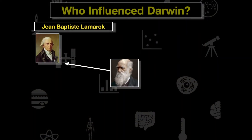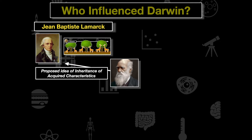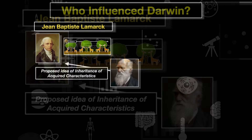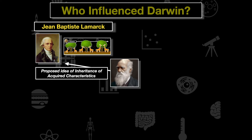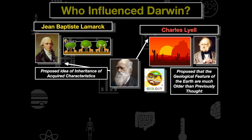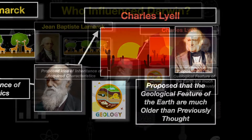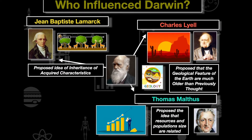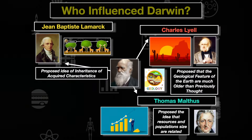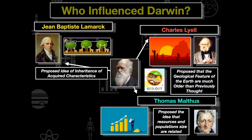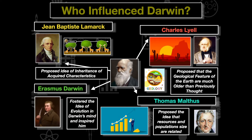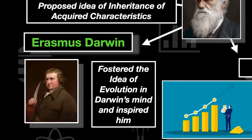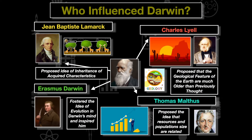Charles Darwin is influenced mainly by a few key people. Lamarck proposed the idea of inheritance of acquired characteristics — this initially sparked the idea of evolution in the scientific community, but was shown to be wrong, and natural selection was proven correct. Lyell proposed that geological features are much older than previously thought. Malthus, an economist, proposed that resources and population size are related, making Darwin think about resources in predator-prey populations. Lastly, Darwin was influenced by his grandfather Erasmus Darwin, who fostered the idea of evolution in Darwin's mind and inspired him to complete the scientific journey that led to the Origin of Species.